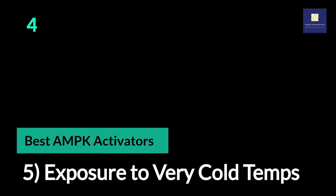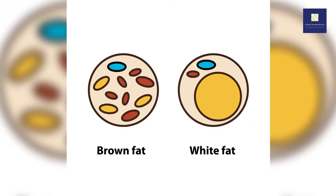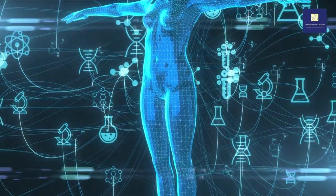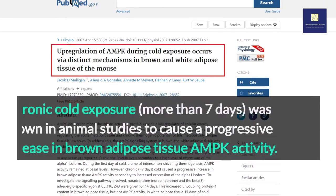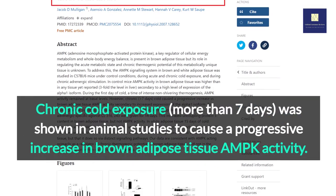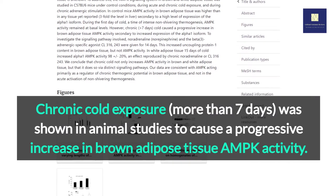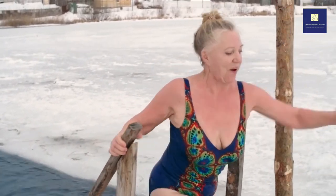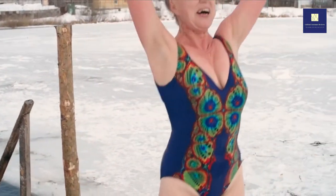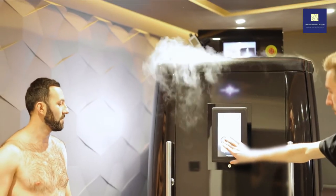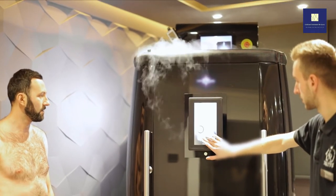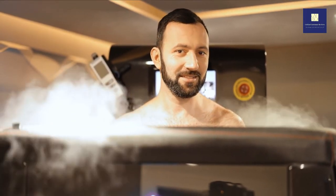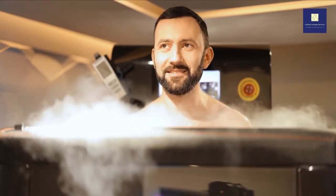5. Exposure to Very Cold Temperatures. Brown adipose tissue, or brown fat, contains AMPK and is involved in the regulation of metabolic state and body temperature. Chronic cold exposure of more than 7 days was shown in animal studies to cause a progressive increase in brown adipose tissue AMPK activity. While it's unlikely that people would expose themselves to uncomfortably cold temperatures for 7 or more days to boost AMPK, some believe cryotherapy — a cold exposure technique using liquid nitrogen or argon gas — can have similar effects to reduce inflammation, relieve pain, and aid in recovery after exercise.